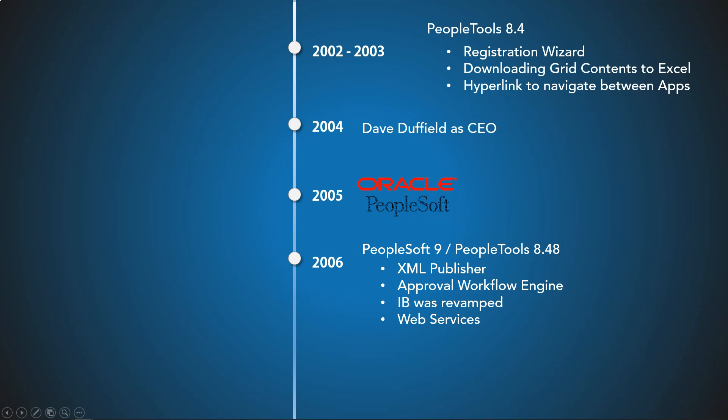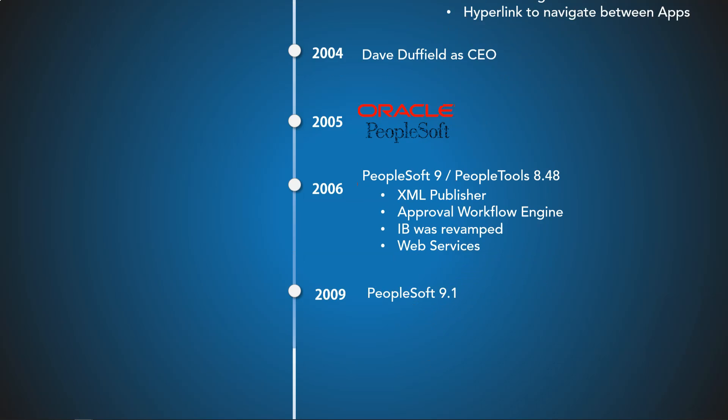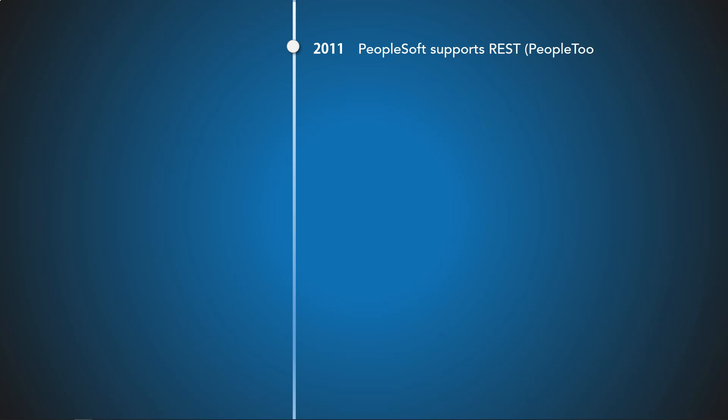PeopleSoft released version 9.1 in 2009. In 2011, PeopleSoft started supporting REST-based integration starting with PeopleTools 8.52. To give some idea about REST integration: most of the actions you do on a website — like manually searching videos on YouTube — you can do the same sitting inside the PeopleSoft application using PeopleCode. That's the power of REST integration.